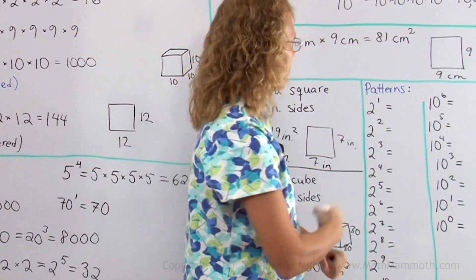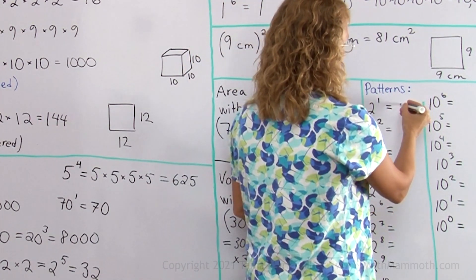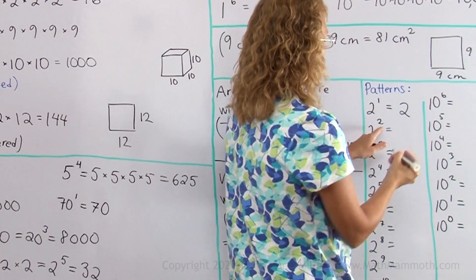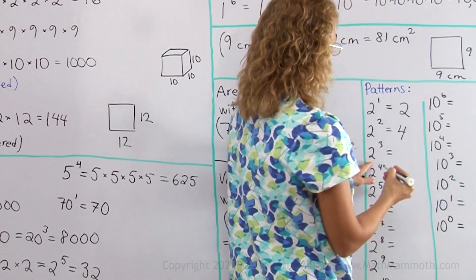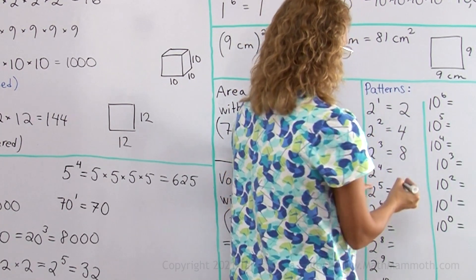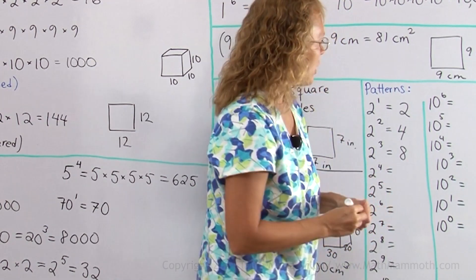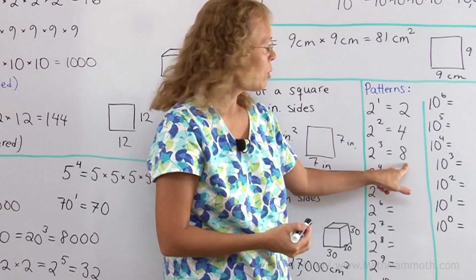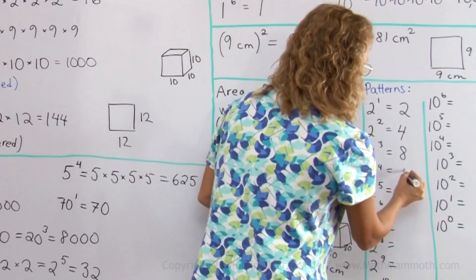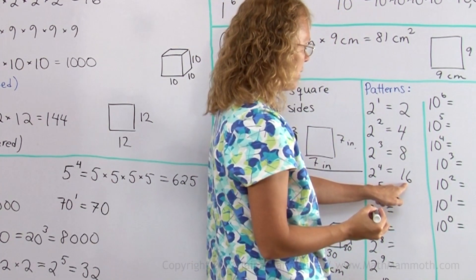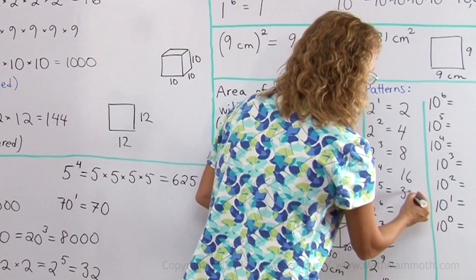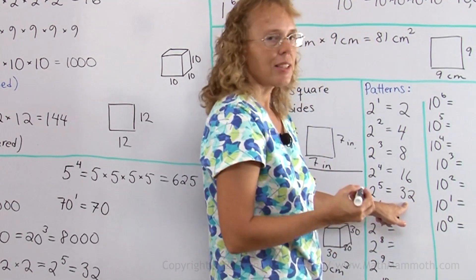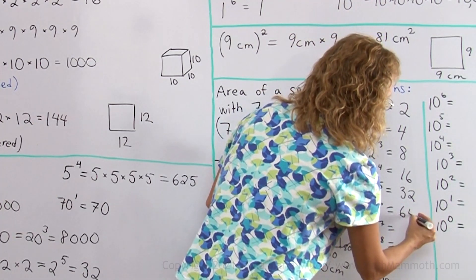This is used a lot there. 2 to the first power is just 2, 2 squared would be 2 times 2, 2 cubed is 8, 2 to the fourth power. You see, I can just take this number and double it, multiply it by 2 one more time—16. Then I take this and double it to get this one, 32.